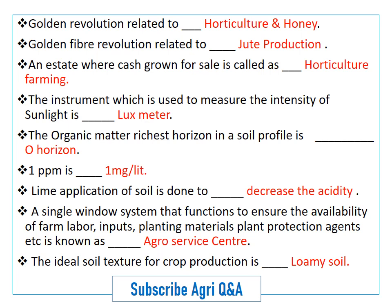1 parts per million is 1 mg per litre. Lime application to soil is done to decrease the acidity of the soil. A single window system that functions to ensure the availability of farm labor, inputs, planting material, and plant production agents is known as agro service centers.